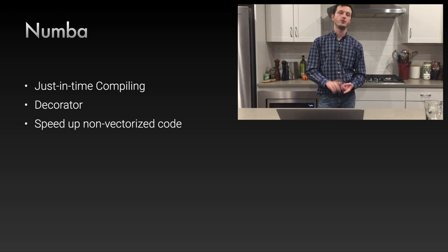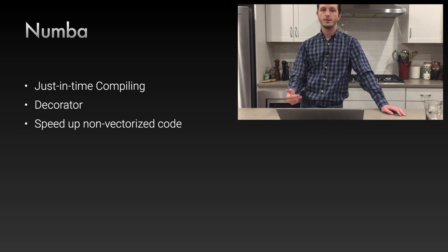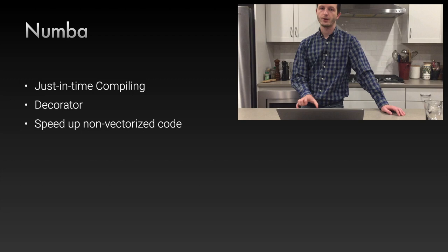Numba is one of the tools to make Python faster. It's a just-in-time compiler: the first time you run a Numba function, it compiles it to machine code, and every subsequent call is much faster. All it is is a decorator — one line you add to the top of the function. It's great for speeding up non-vectorized code.